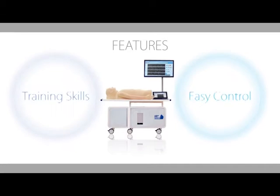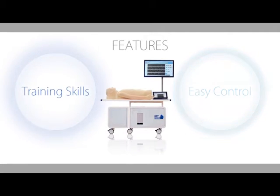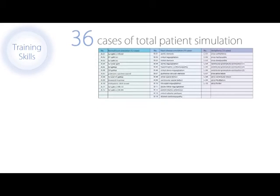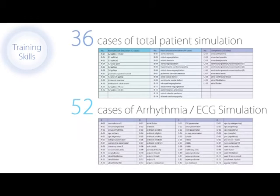The first main feature of the Kei is its training skills. Training skills provided by the Kei are facilitated by a collection of 36 patient simulation cases and 52 arrhythmia and ECG cases.